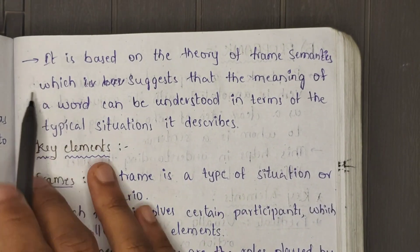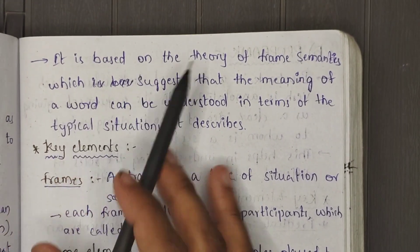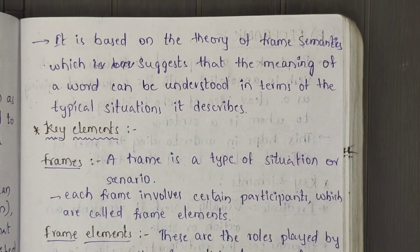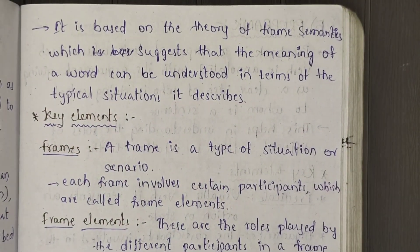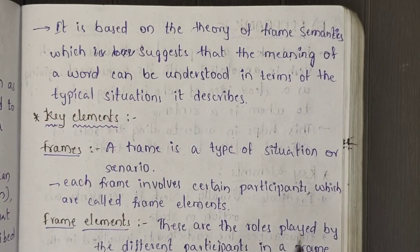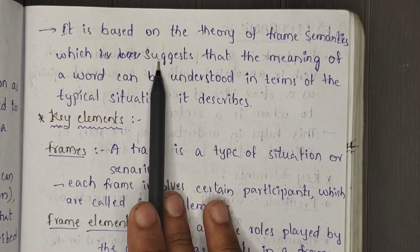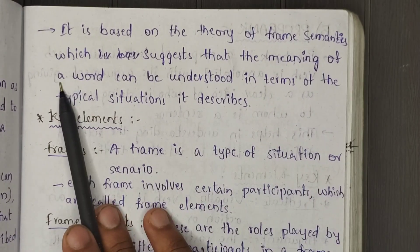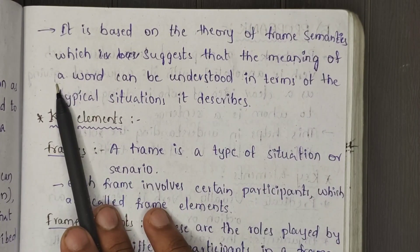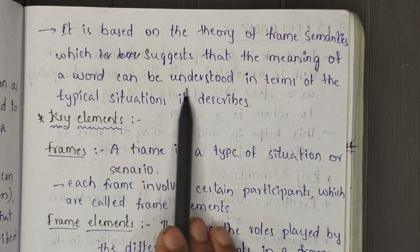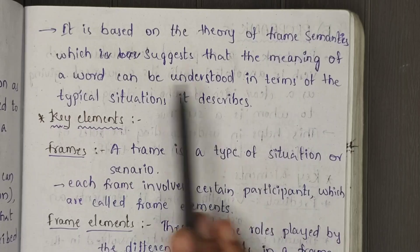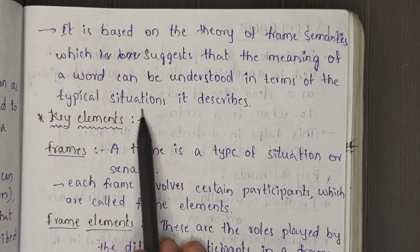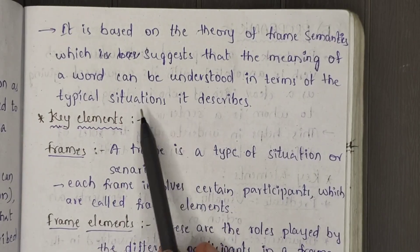FrameNet is based on the theory of frame semantics, which suggests that the meaning of a word can be understood in terms of the typical situation, or frame, it appears in.